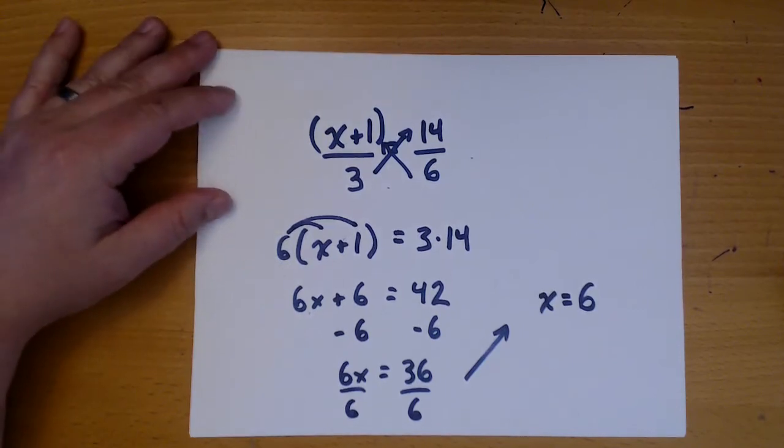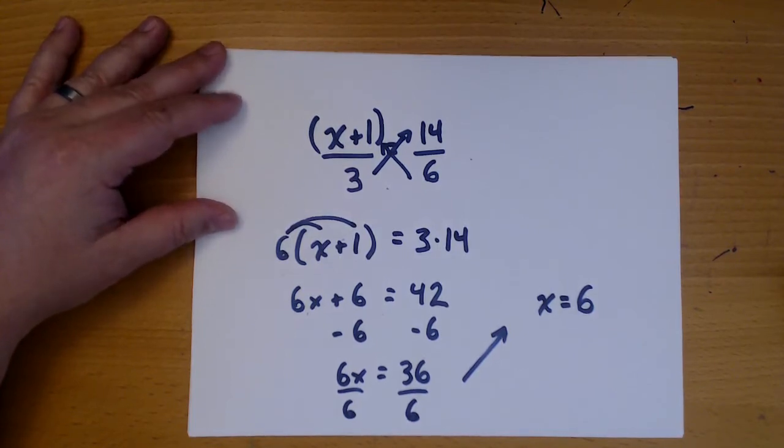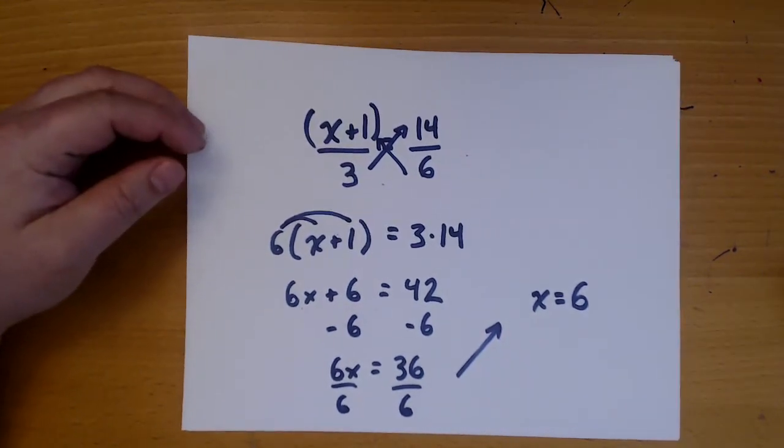Okay. Now these two examples, our answers came out as whole numbers. Often the answer won't be a whole number, but instead will be a fraction. That's okay. You just have to remember to reduce your fractions.